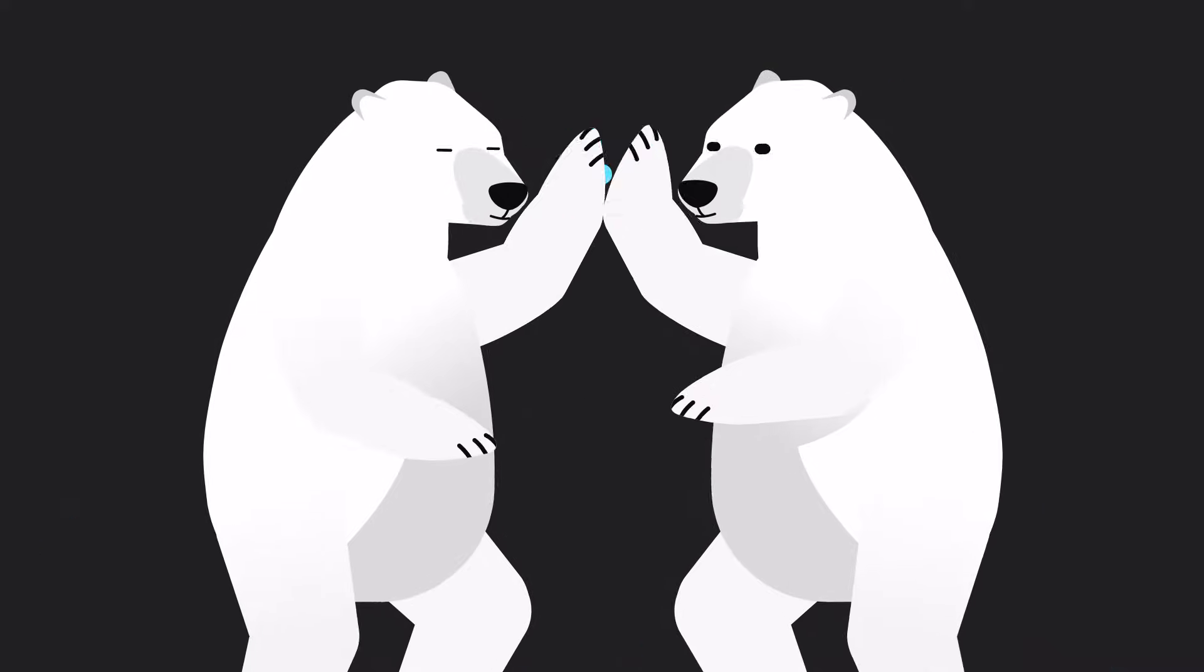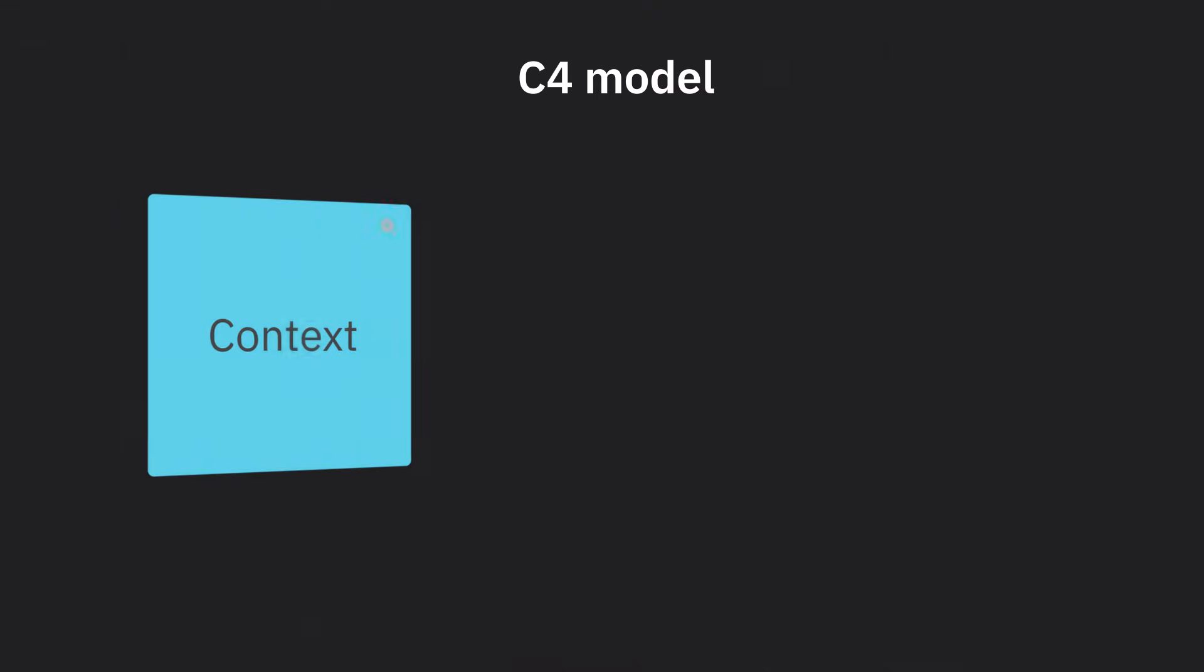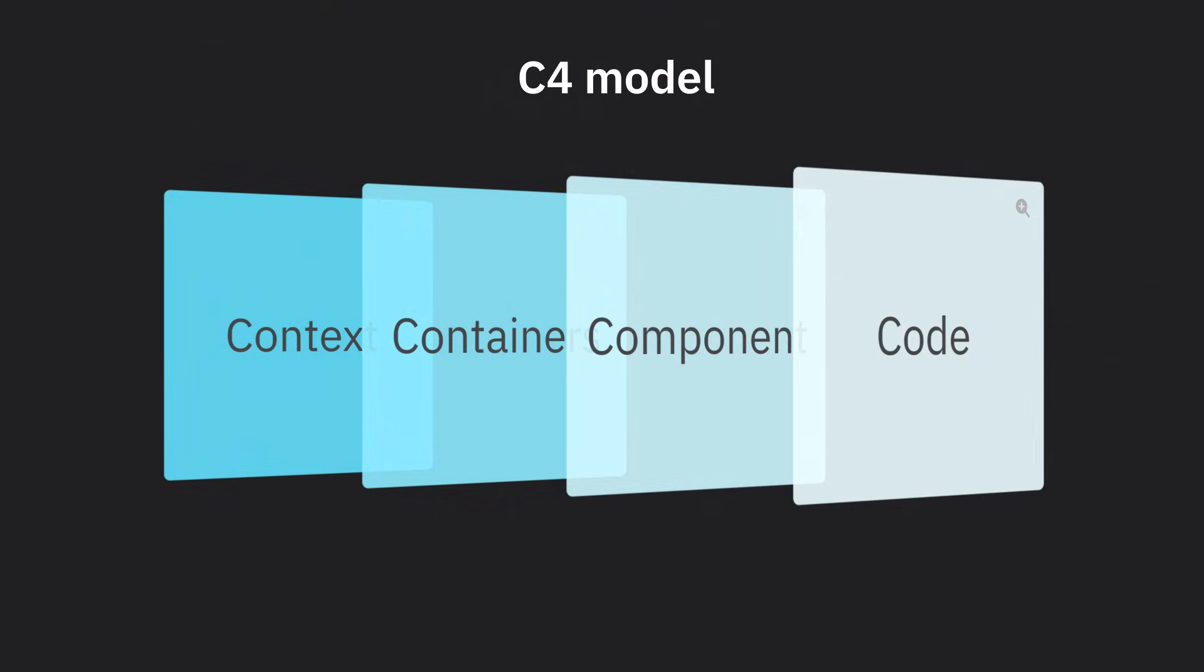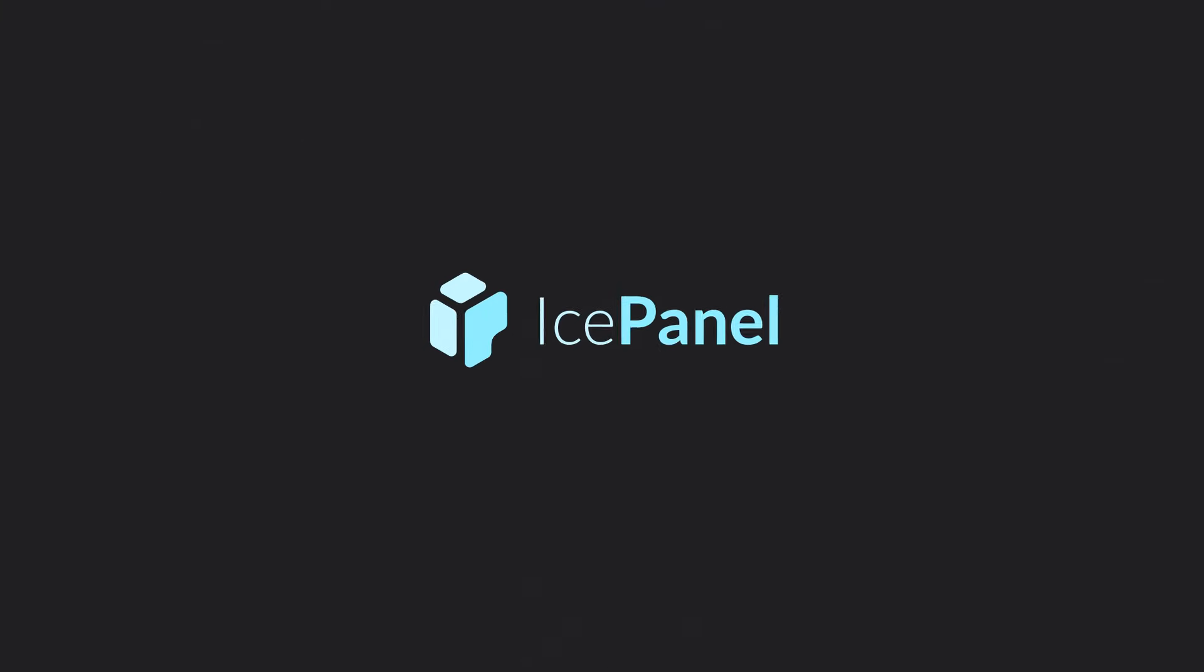So next time your team gets lost in architecture, remember: Context, Containers, Components, Code - the C4 model. It's how polar bears stay so chill. IcePanel: visualize software architecture together and stay chill.